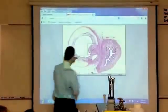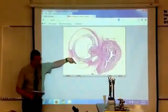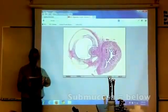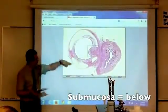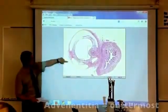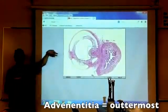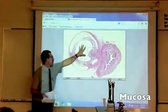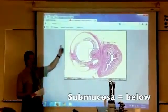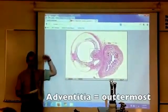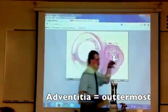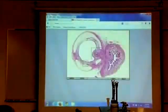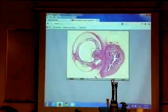What do you call the layer right here? The dark layer that is touching the lumen? Mucosa. Because mucosa touches the edge. What would you call everything below the mucosa? Submucosa. Because it's below. What do you call the very outside? You can barely see here. Adventitia. So there's four layers, basically. But wait, there's more.